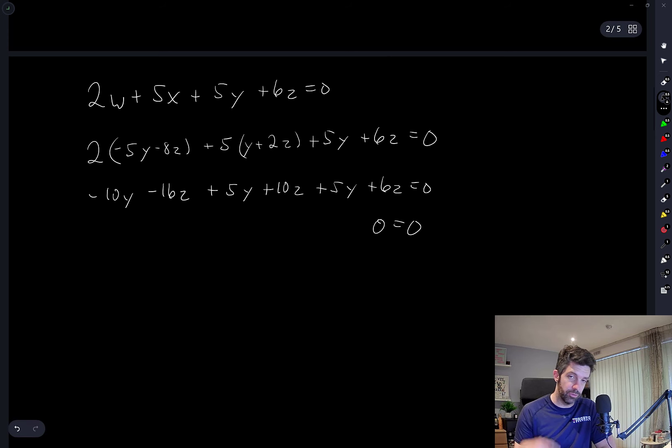So this is saying that the fourth equation is also redundant. So the fact that this happened twice, this sort of redundancy of equations, means that the solution to the system will have two degrees of freedom.